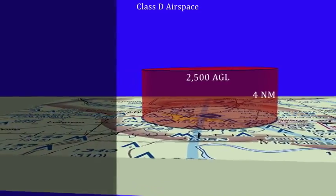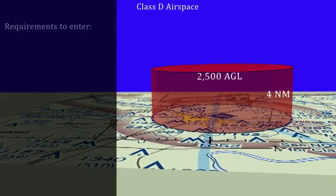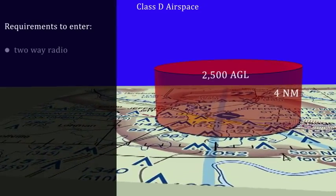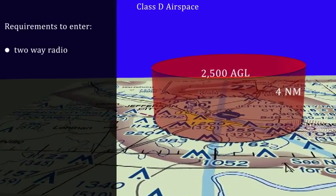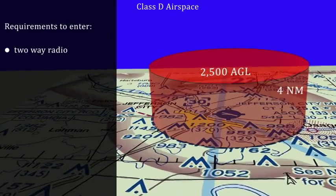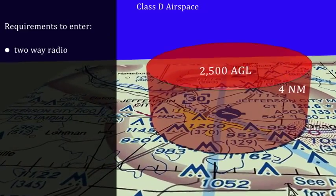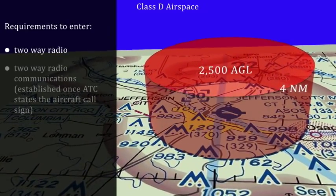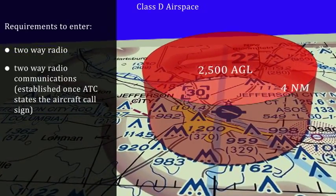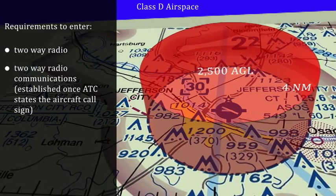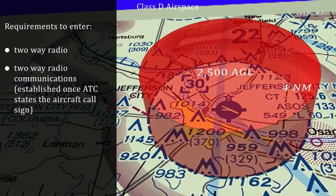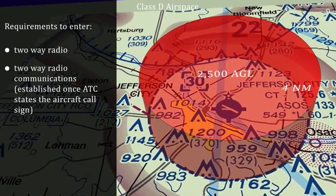Your airplane must be equipped with a two-way radio to enter a Class D airspace, and radio communications must be established with the tower prior to entering the airspace.